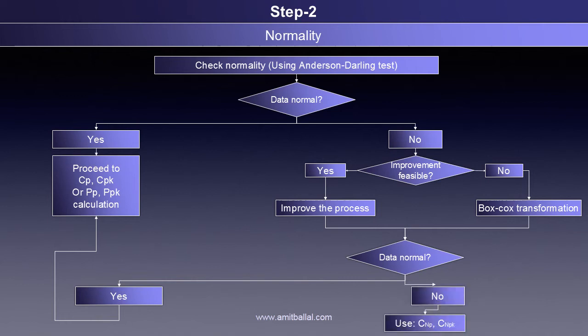In case a process is not normal, another measure — CNP and CNPK — can be used after approval from the customer, since it is not commonly used. You can find more information in the standard ISO 22514-4. Due to time constraints and this measure not being very common, we won't be able to cover it here.